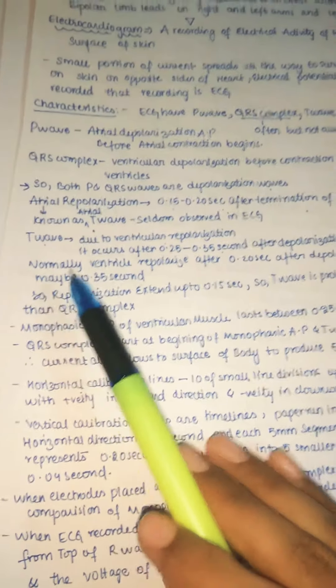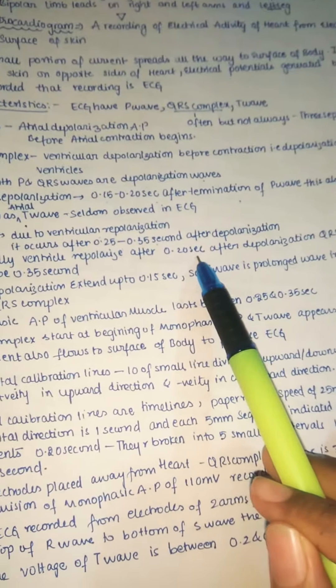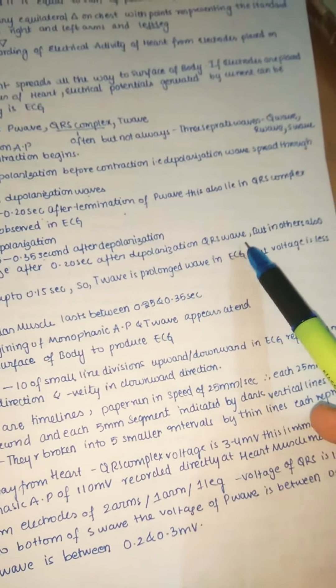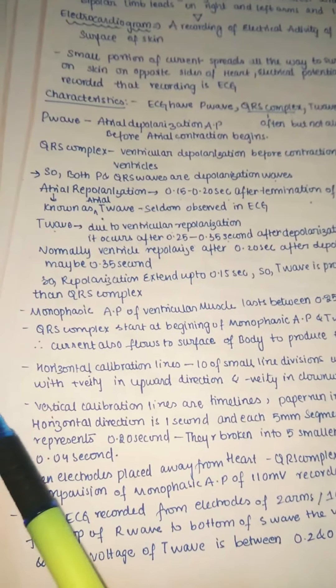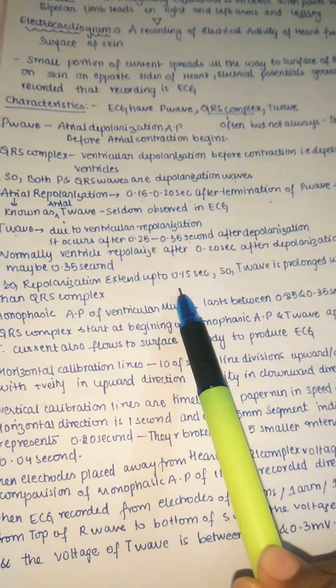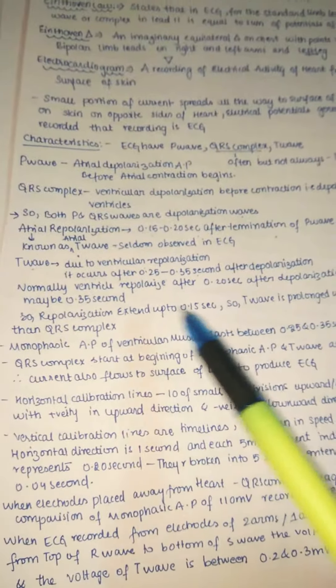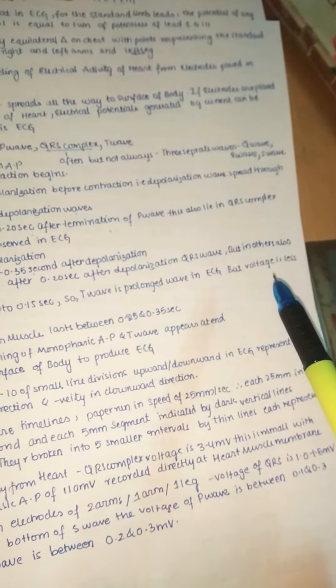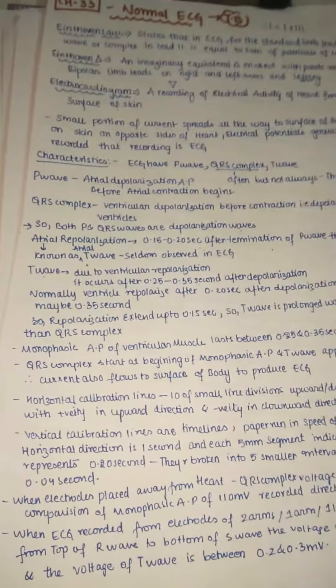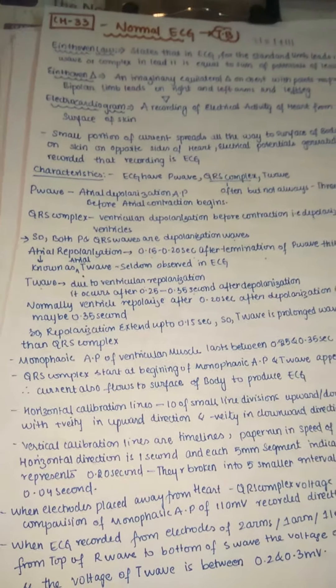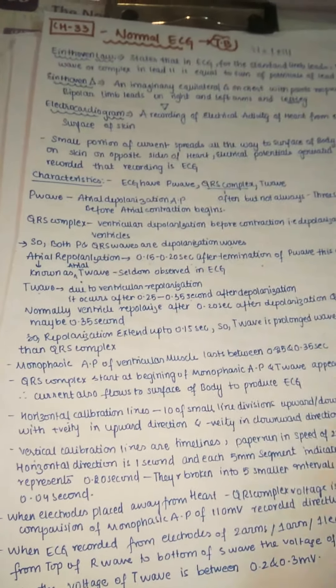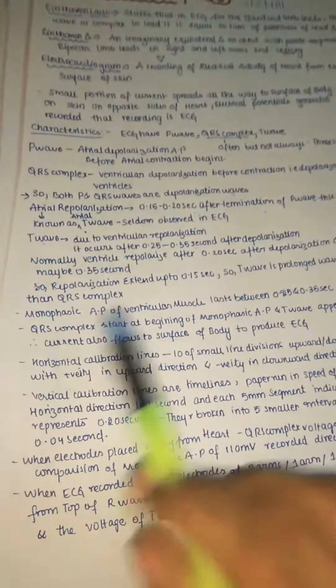Normally the ventricle repolarizes about 0.20 seconds after depolarization, but in some cases it may extend up to 0.35 seconds, so the repolarization can extend up to 0.1 second. Because the repolarization process prolongs, the T wave also prolongs — which is why the T wave is called a prolonged wave. However, the voltage of the T wave is less than that of the QRS complex; the QRS voltage is higher.